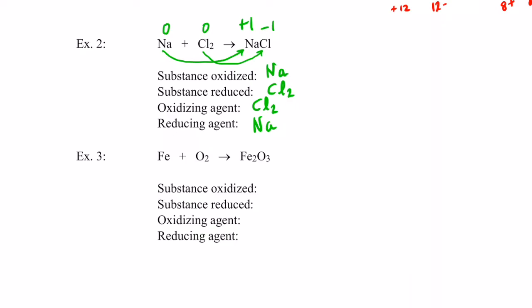Welcome back. Iron has an oxidation number of zero — it's in its elemental state as Fe. O₂ is the elemental form of oxygen so its oxidation number is zero. On the product side, Fe₂O₃: oxygen is obviously more electronegative than iron. Its charge would be two negative, giving a total of six negatives because there are three oxygens, so I need to get six positives, meaning each iron would be positive three.